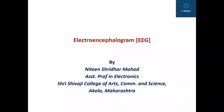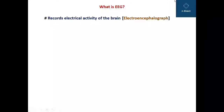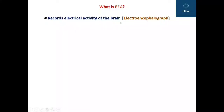Hello students, this is Nitin Mohod and today we are going to study one of the most important biomedical electronic devices: electroencephalogram, which is abbreviated as EEG. It is a biomedical electronic device used to record the electrical activity of the brain. The record obtained on graph paper or displayed on an oscilloscope screen is called an electroencephalogram.